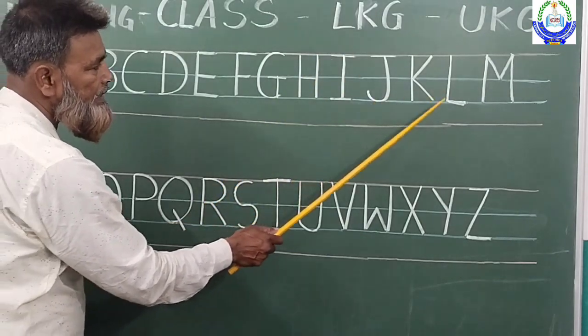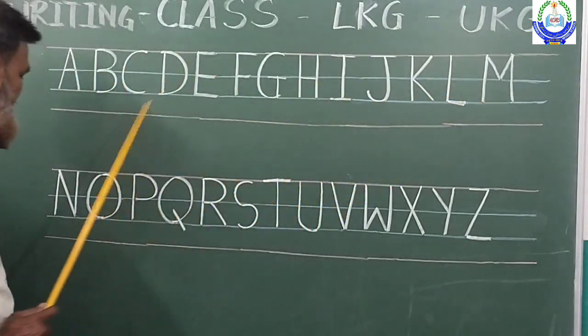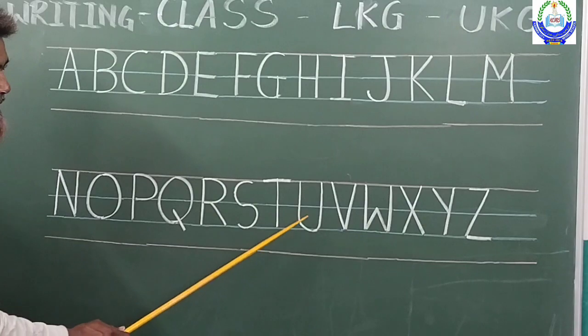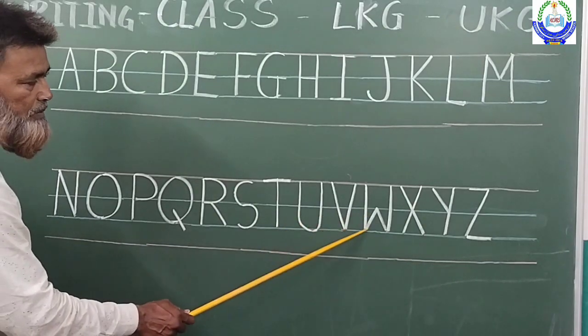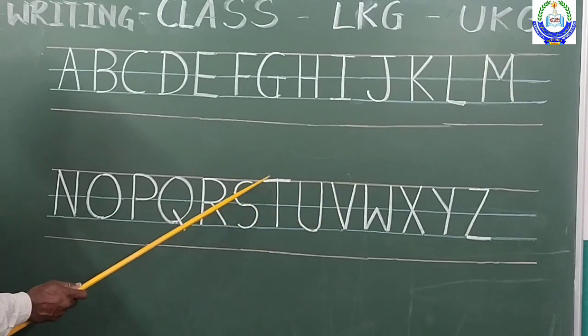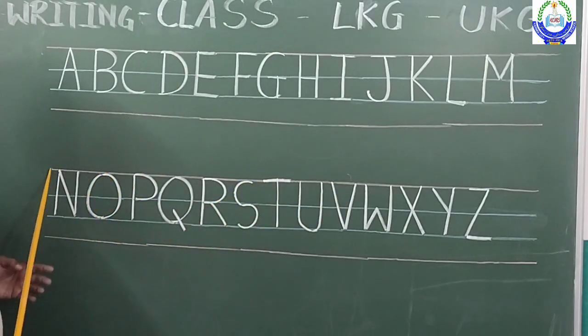J, K, L, M, N, O, P, Q, R, S, T, U, V, W, X, Y, Z in capital letters. These three lines are only used, okay boys and girls.